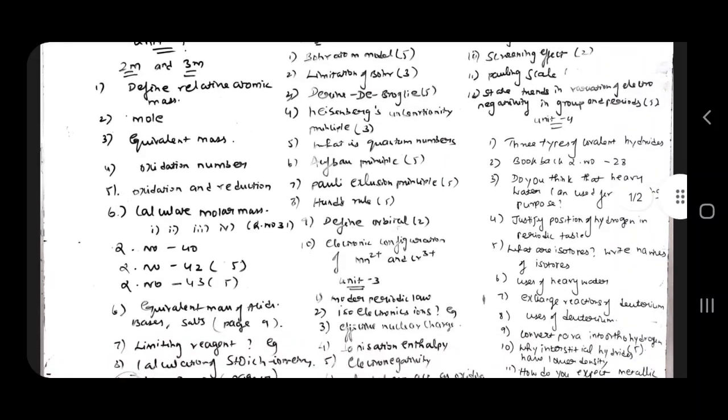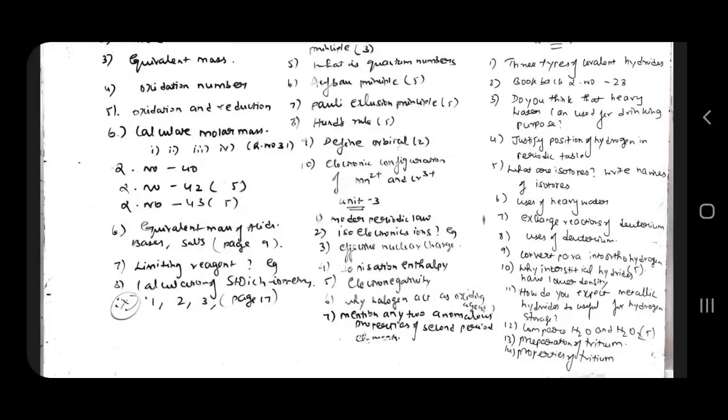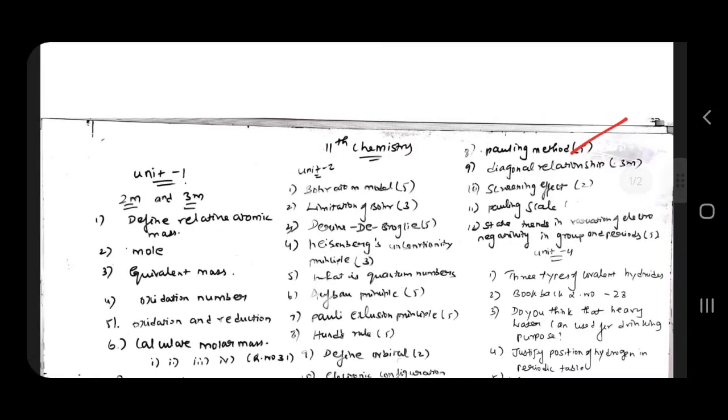Different types of quantum number, iso-electric ions, define nuclear charge, ionization enthalpy, electron negativity, and why halogen act as oxidizing agent. Mention the two anomalous properties of second period element. Very important 3 mark. Pauling method direct 5 mark. Diagonal relationship confirm 3 mark. Screening effect 2 mark. Pauling scale 5 mark.